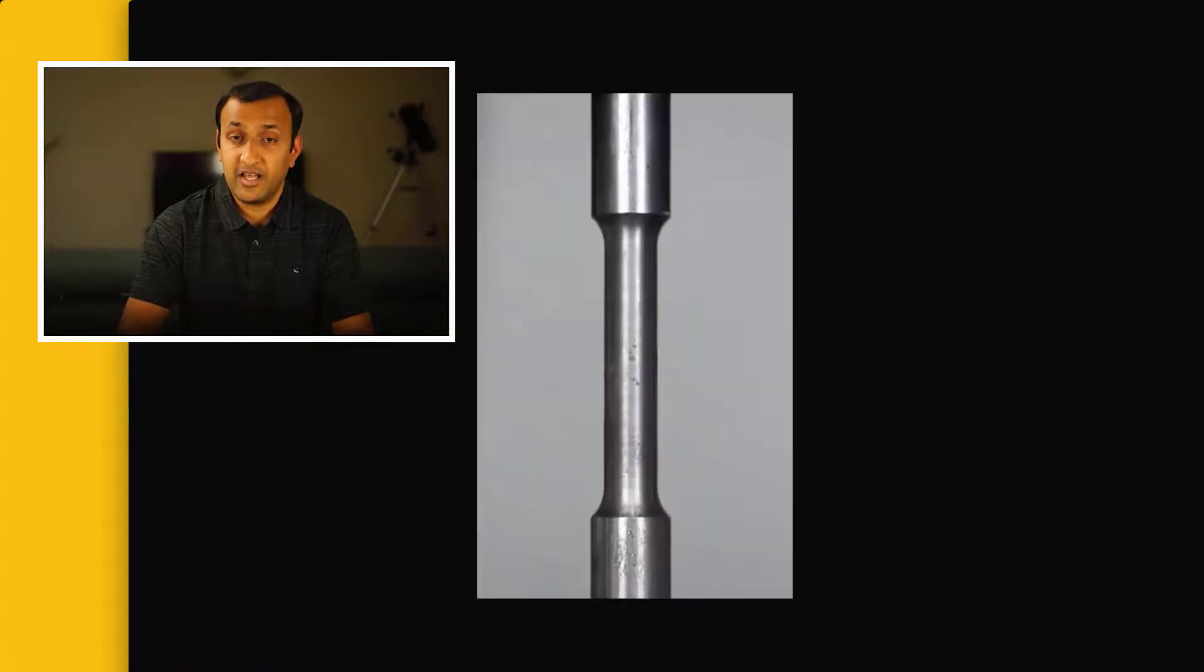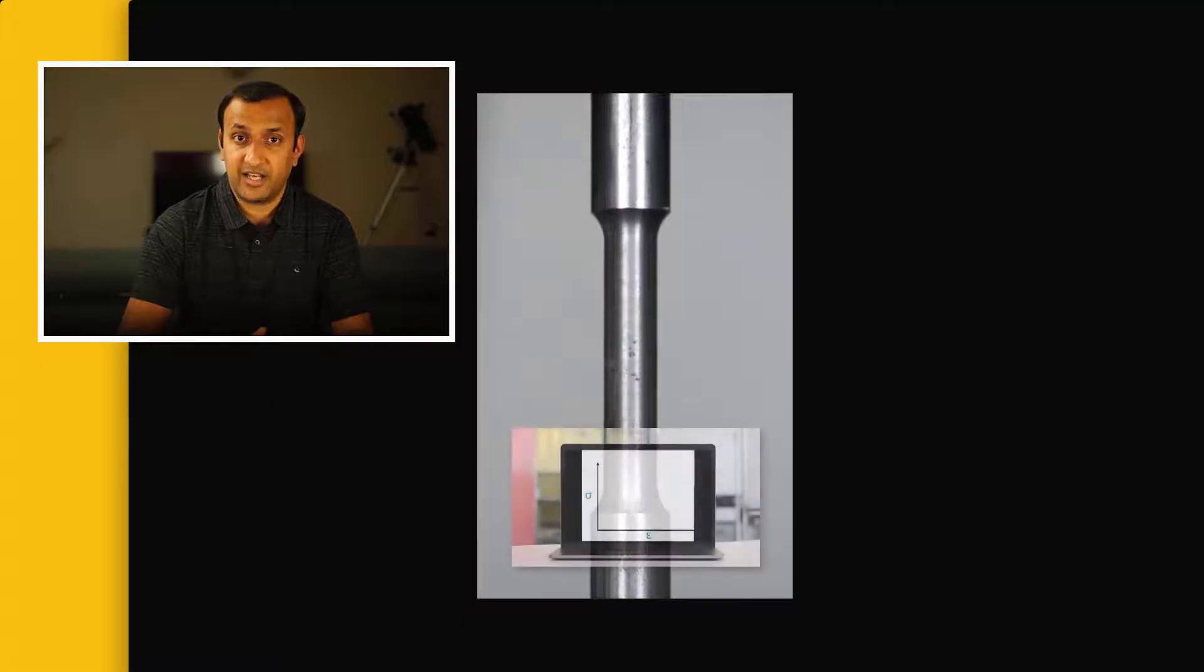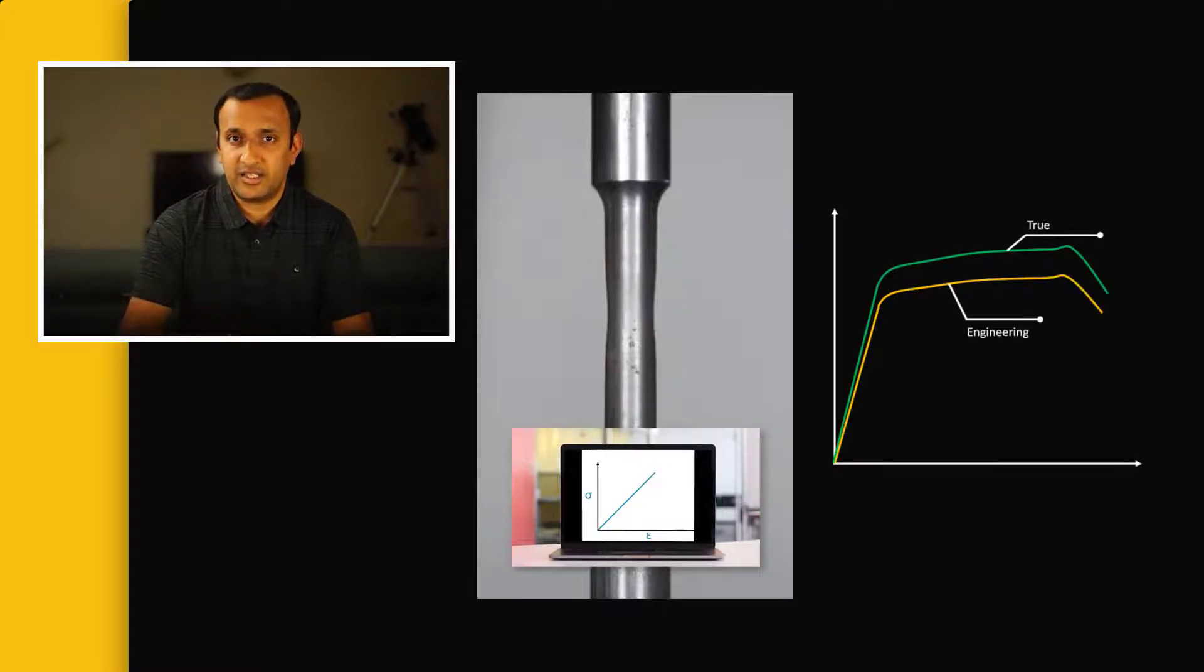This is because the engineering stress and strains are calculated based on the dimensions of the undeformed sample. However, as the strain increases, the area of cross-section of the sample reduces due to Poisson's effect. So, at higher strains, the engineering stress and strain deviates from the true stress and strain developed in the material. This difference may not be significant in the deformation ranges that we are interested in, but it's always a good practice to properly define the material input.